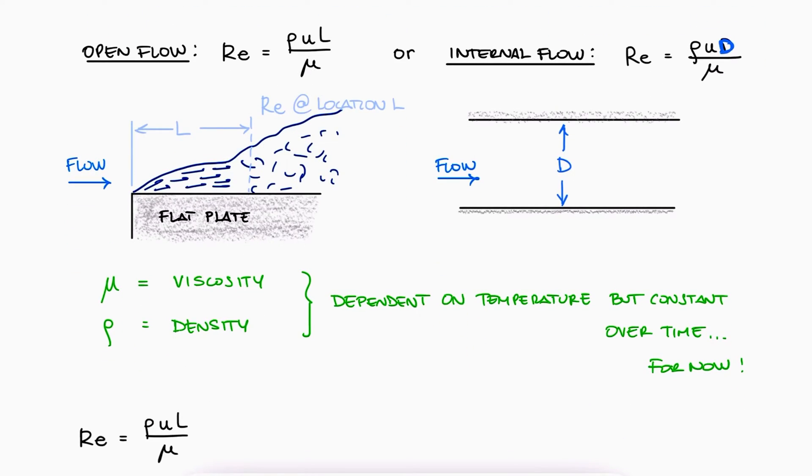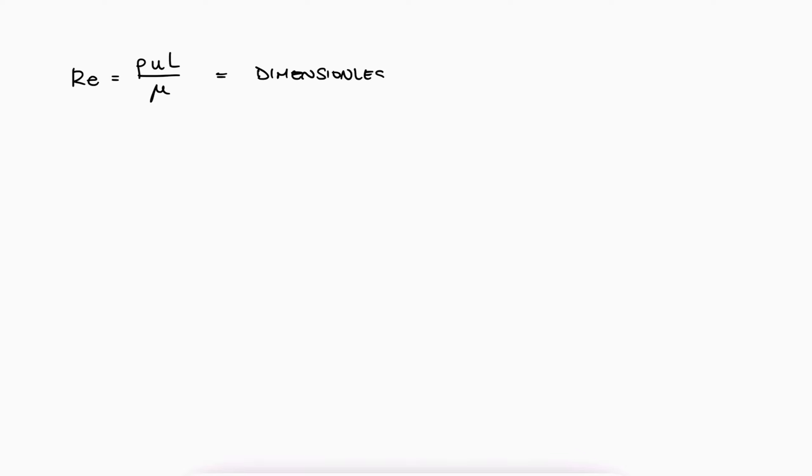Let's verify this number is dimensionless using metric units. The velocity is meters per second, the characteristic length is meters, the dynamic viscosity is kilograms per meter second, and the density is kilograms per cubic meter. Therefore, kilograms and seconds cancel out, as do the meters terms.